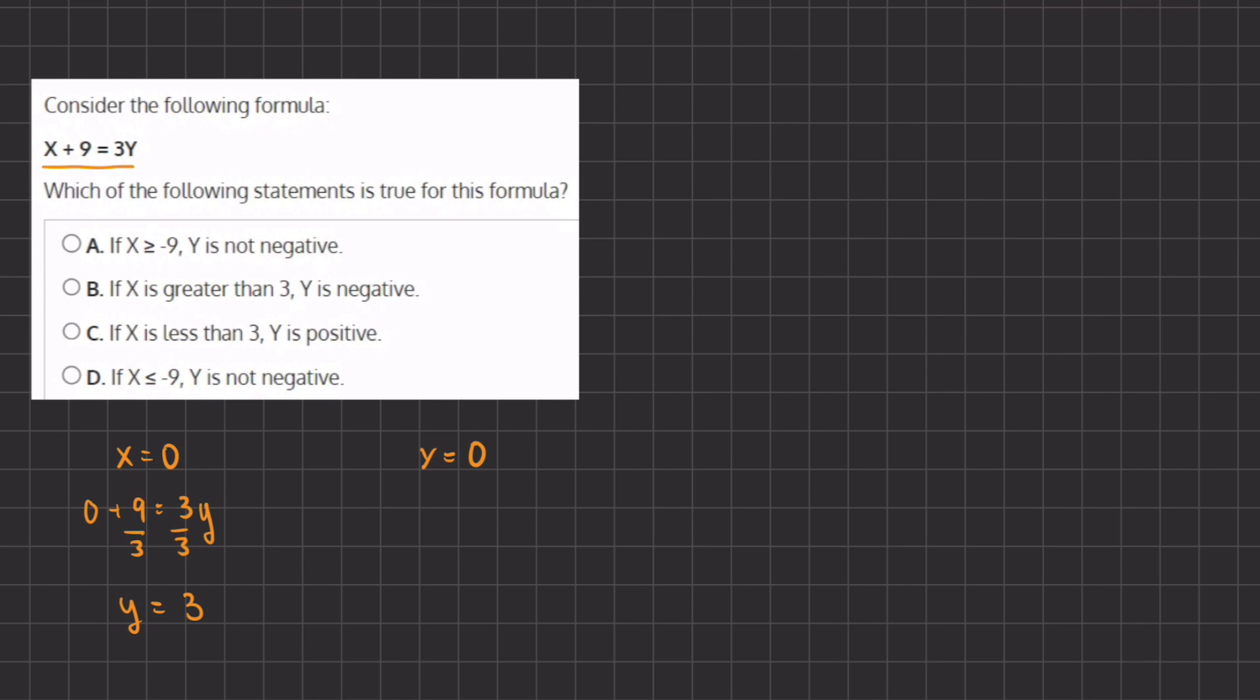Our second point is when y equals 0, so let's plug that in. We have x plus 9 equals 3 times 0. So when we simplify this, we have x equals negative 9, and so that's going to be our second point. Now let's quickly sketch out a graph and plot our two points.